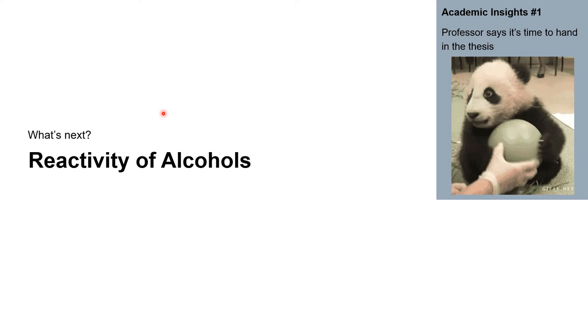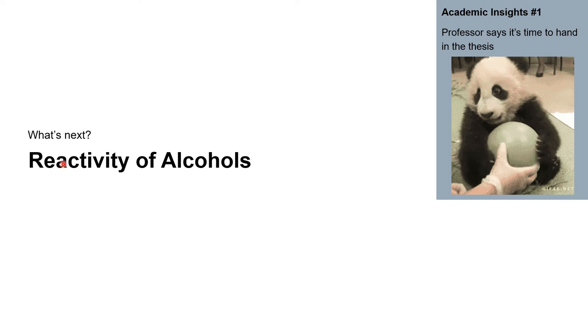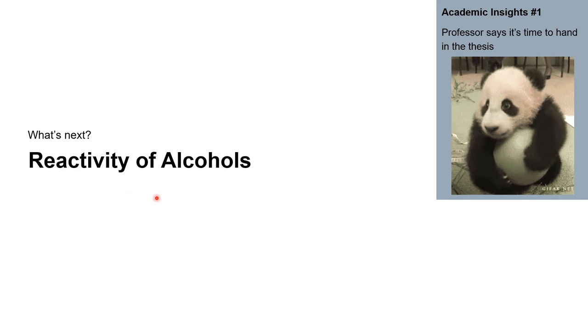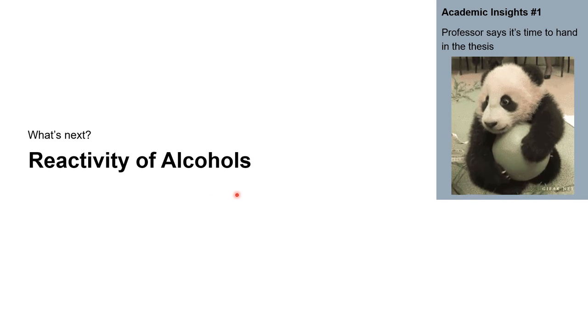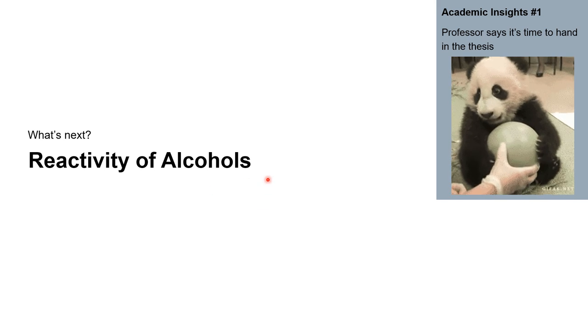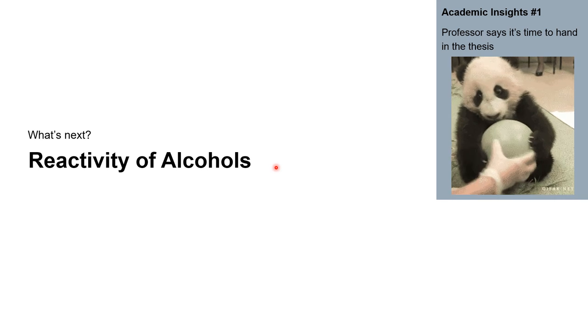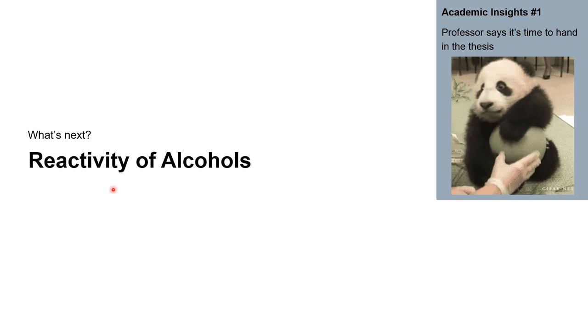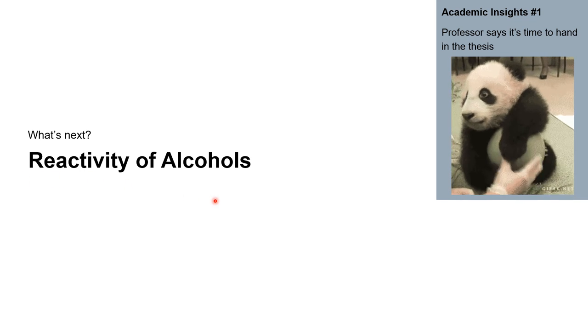So this brings us to the end of the first lecture, a brief crash course and a bit of revision on carbonyl chemistry and how to make alcohols, and what their properties are. Next time around we will look at one or two more ways how to make alcohols and then we'll look more in detail at the reactivity of alcohols. So see you next time.